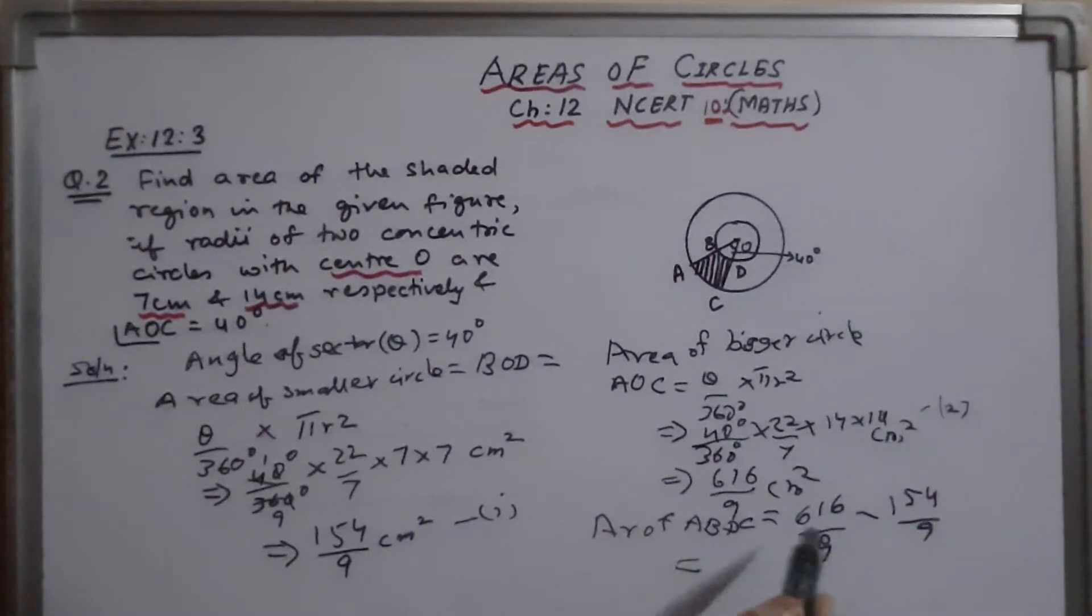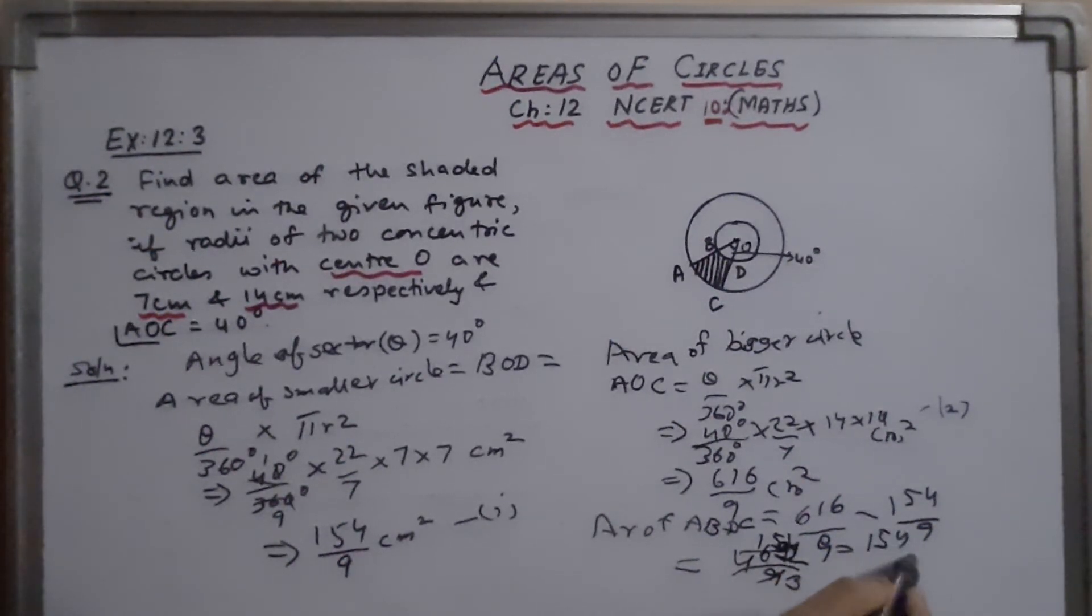This will be 462 upon 9. That will be 154. So it will be 154 upon 3 cm square. This is the required answer.